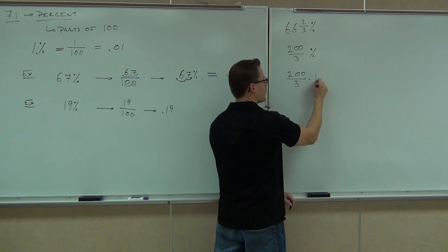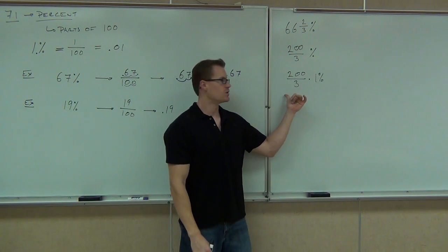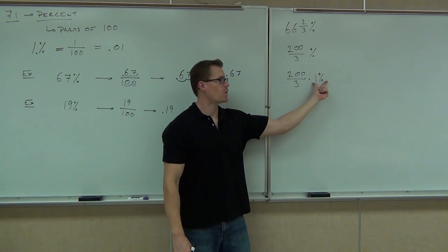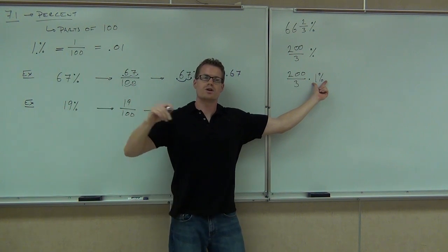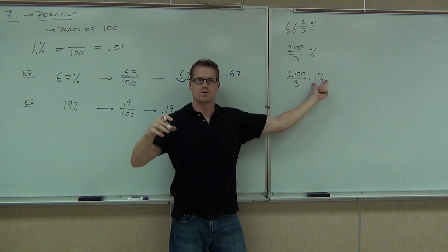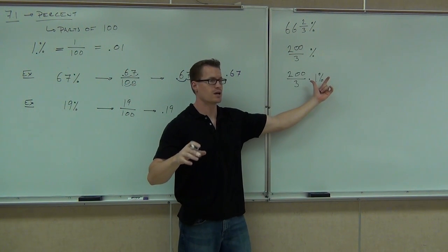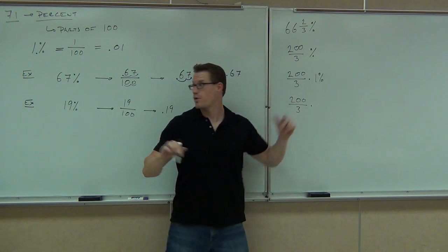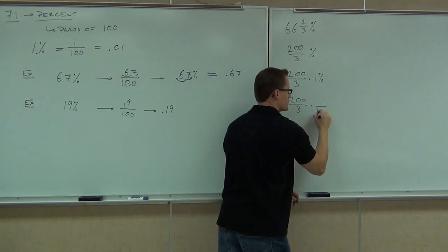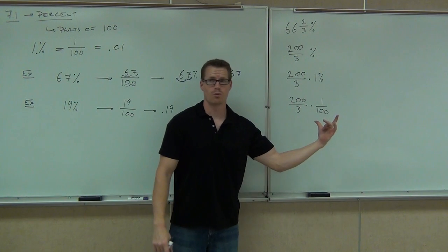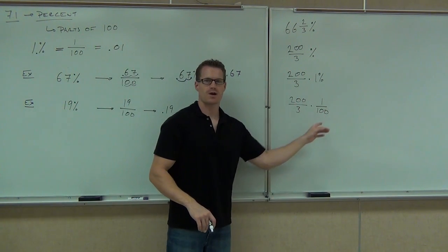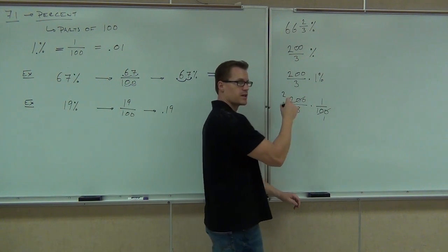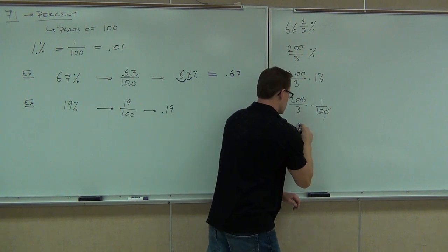200 over 3 times 1% — do you agree that's the same thing? 200 over 3 times 1 gives you 200 over 3, and the percent's still there. How much is 1% equal to? 1 over 100. So in order to change from a fraction percent into a fraction itself, all you've got to do is break off that percent and replace it with 1 over 100. Can you simplify that fraction? You're simplifying 200 and 100, so you get 2 over 30.